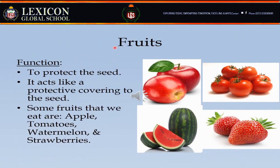This is fruit. Fruits are developed from a part of a flower. Fruits are usually sweet to taste and are good for health as they provide vitamins and minerals. The function of fruits is to protect the seeds — fruits act like a protective covering for the seeds. Some fruits that we eat are apple, tomato, watermelon, and strawberry.